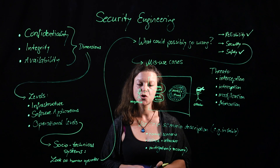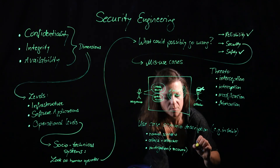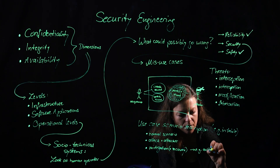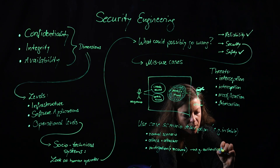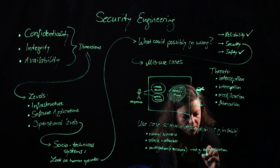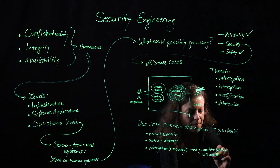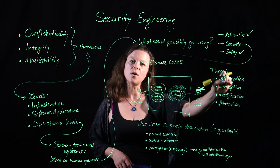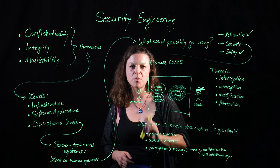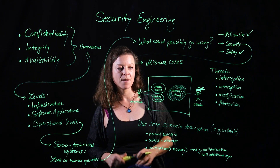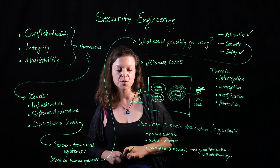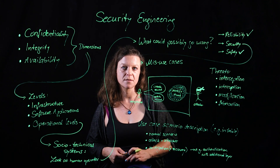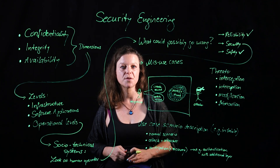So you go through all four generic types of threats and think about how they apply to the system you're currently developing. You work through the use case scenario descriptions and the attack descriptions, and identify how you're going to mitigate in each of those cases. And that's how you perform your security engineering for a socio-technical system.